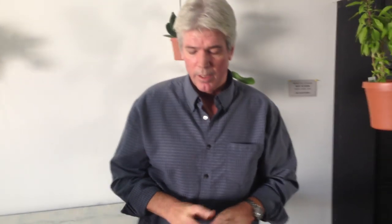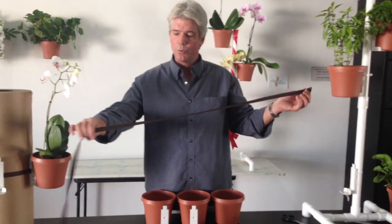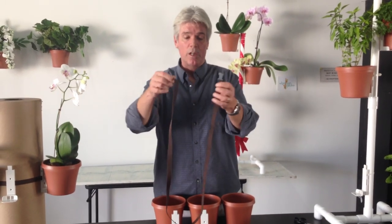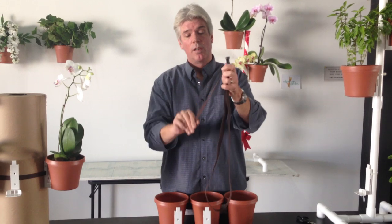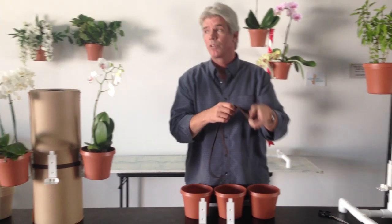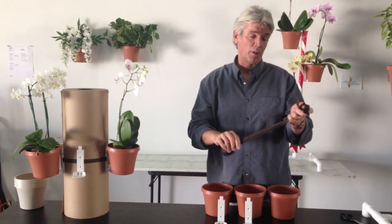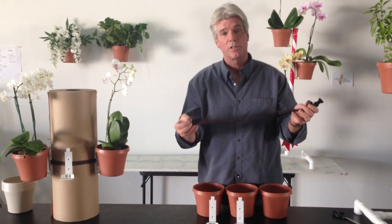The second kit we have comes with a 5-foot nylon adjustable strap. This would be meant for stationary objects that are 5 feet in circumference or less. Typically that would be a tree trunk or a similar object.